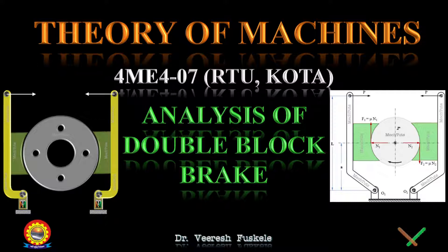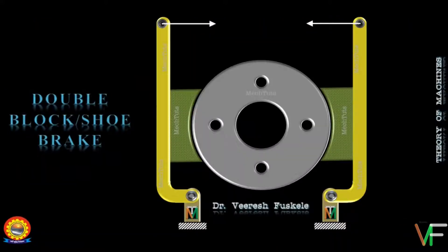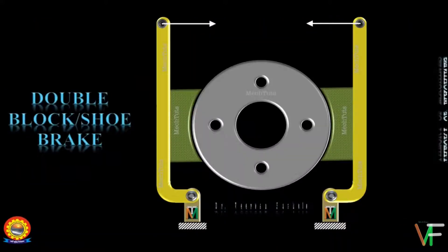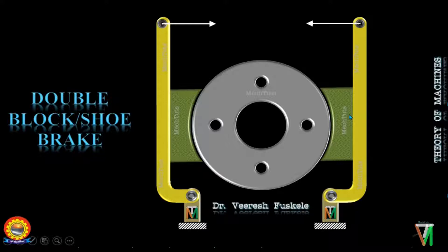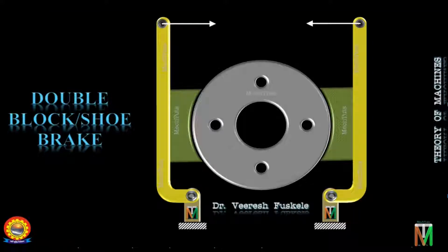Let's start with the double block brake. This is how the double block brake looks like. As you can see, there is a drum around which two blocks are placed diametrically and symmetrically. Now, why is this arrangement required? This is done to overcome the drawback of single block brake.